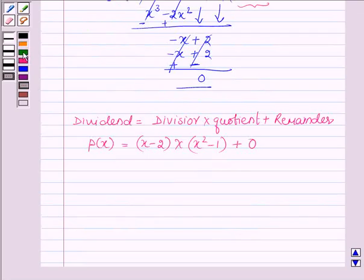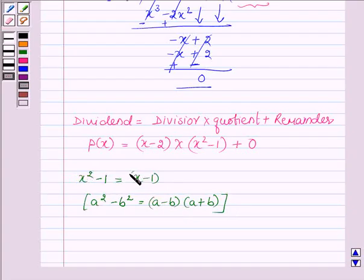Now, since x squared minus 1 is in the form of a squared minus b squared whose formula is a minus b into a plus b, this can be written as x minus 1 into x plus 1. Thus p(x) can be written as x minus 2 into x minus 1 into x plus 1.